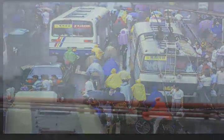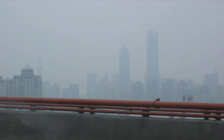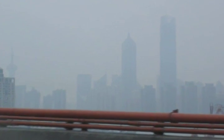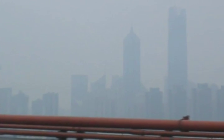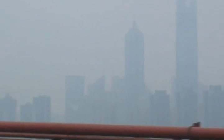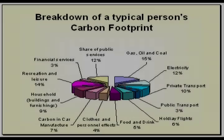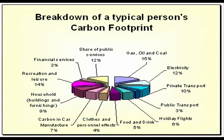As we live our ordinary lives, we leave behind a carbon footprint. A carbon footprint is an abstract measurement of how much CO2 we release into the atmosphere. The pie chart represents the percentage of CO2 emissions from each category that the average person uses.